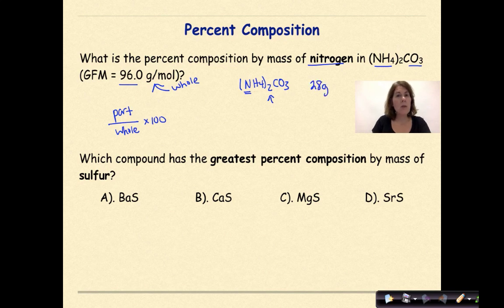So when we take our numbers and we insert them into the formula, it's going to be 28 grams over 96 grams per mole, which is given to us, times 100. And 28 divided by 96 is 29.2 percent. And that's only focusing on nitrogen.